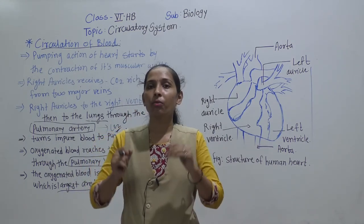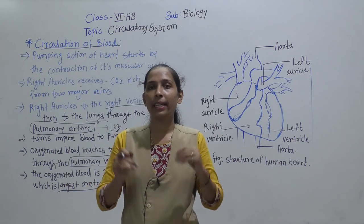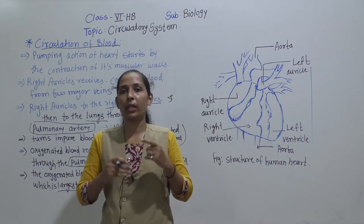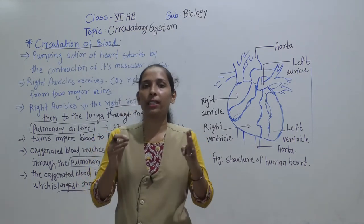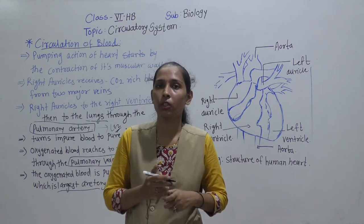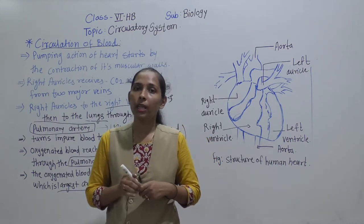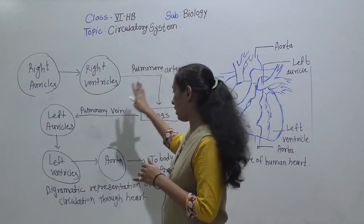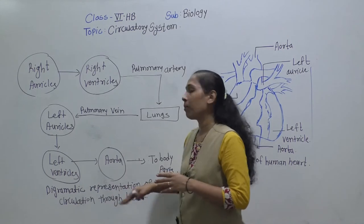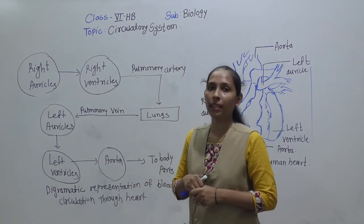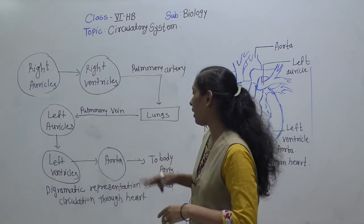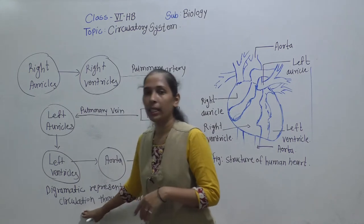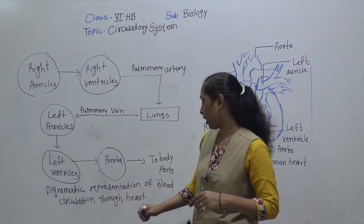Now I will draw a systematic diagram of blood circulation to help us understand exactly how circulation happens in the body. This diagrammatic representation will make it clear how blood gets circulated.